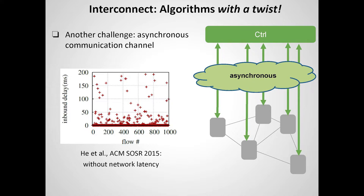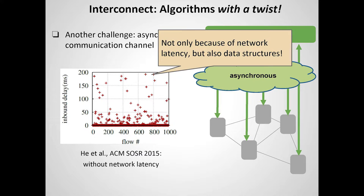What I want to talk about more today are the challenges arising from the interconnection between the controller and the data plane. I'll show you a plot of some variants of the update times that occur when the controller installs rules on OpenFlow switches. The time until these rules take effect has a certain variance — it's not completely immediate and not always constant. These differences are not only due to transmission time but also because different switches take different time to update their data structures.